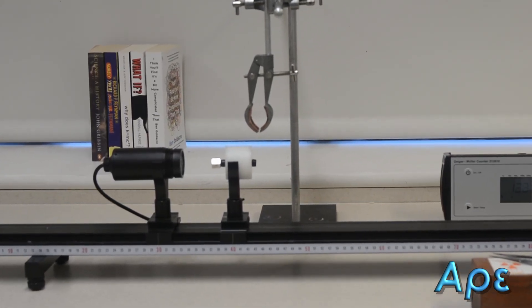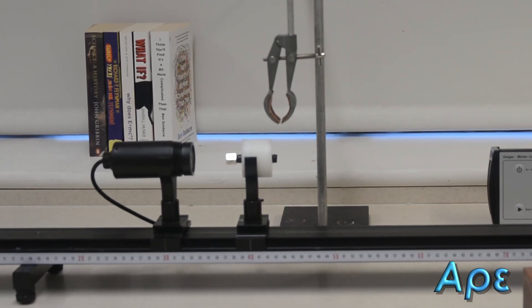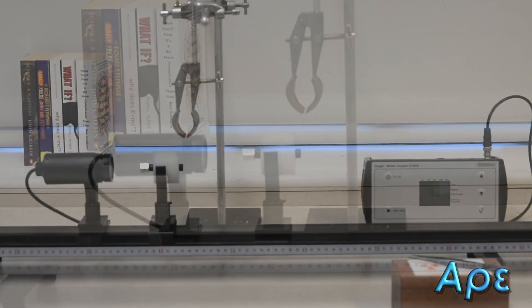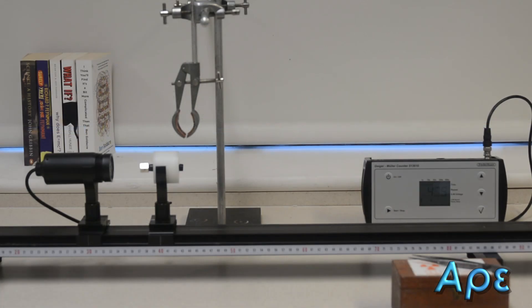As we cannot know where a particular argon atom will be ionized within the GM tube, there will almost always be some systematic error in this experiment. However, with careful analysis later, we may be able to determine approximately what this systematic error is should we so wish.